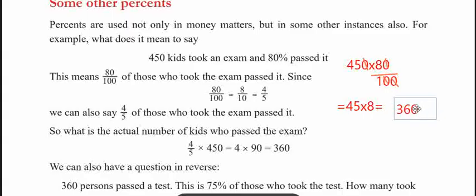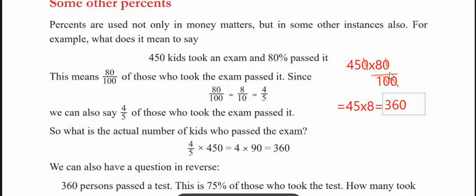360. Then we will work out that for 360 — these are the kids who will pass that exam. We can see that 45 × 8 = 360. So 360 kids passed the exam.